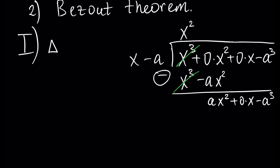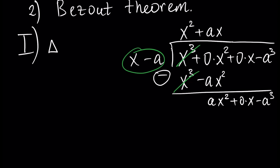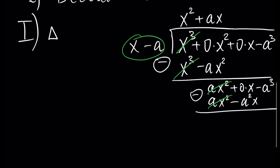Next we write plus ax in the quotient. When we divide a x squared by x minus a, the next term is ax. Then ax times x minus a equals a x squared minus a squared x. After performing the subtraction we get a cancellation, and the result is a squared x.